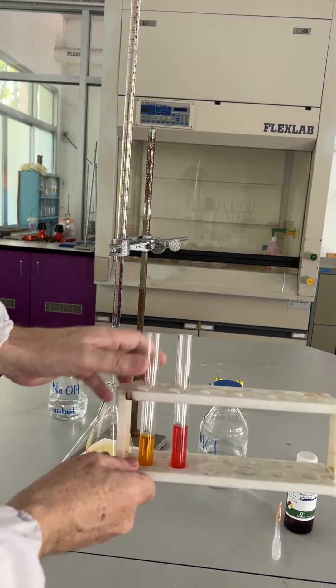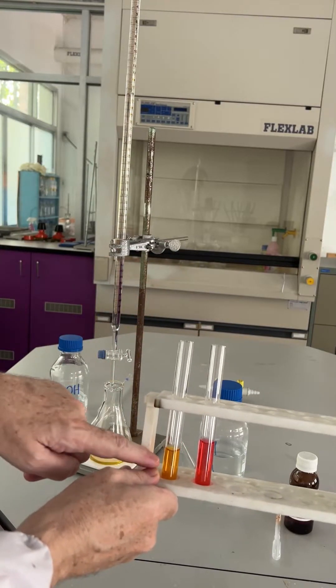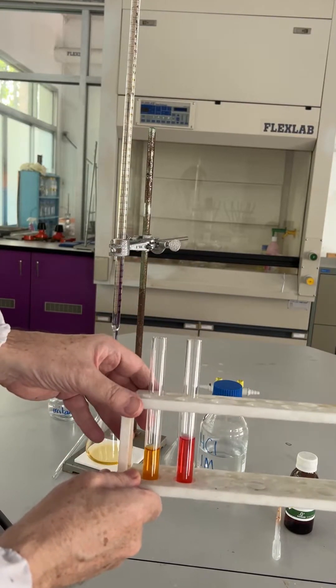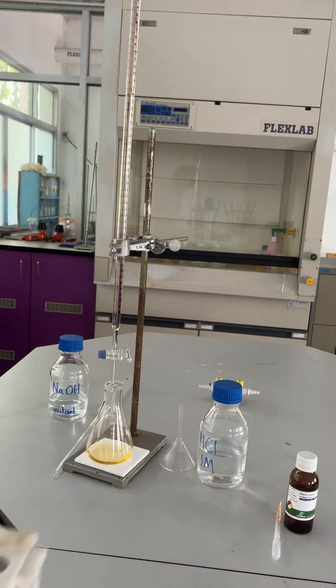And we can see the two colors the indicator shows - acid on the right here. We need to titrate to a mid color between the two, which is an orange color.